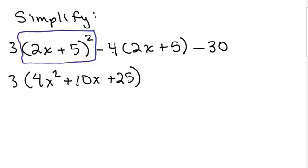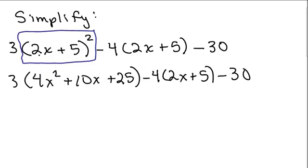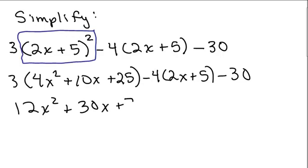Now we're going to continue. Notice we're subtracting 4 times 2x plus 5 — you could do that at the next step. The very first step was squaring this binomial, and the next step is to do multiplication. We've done the exponents, so now we use the distributive property. So we have 3 times 4x squared equals 12x squared. 3 times 10x is 30x. 3 times 25 is plus 75.